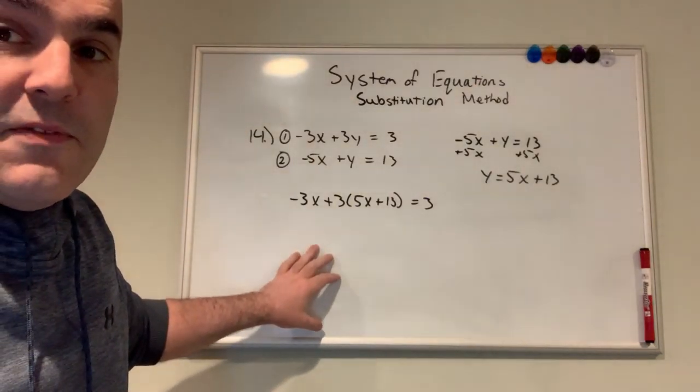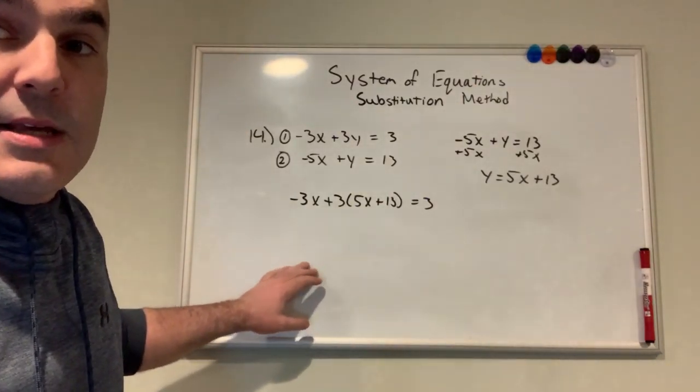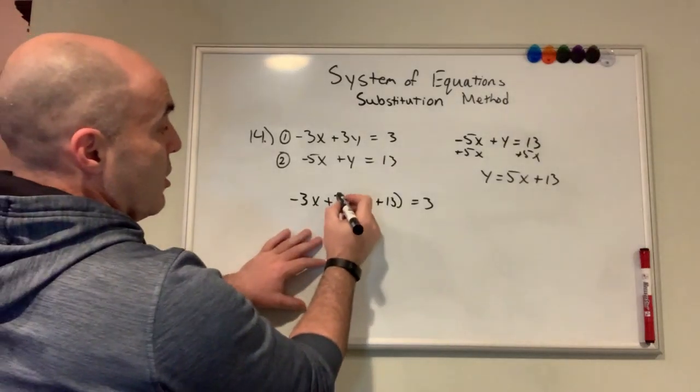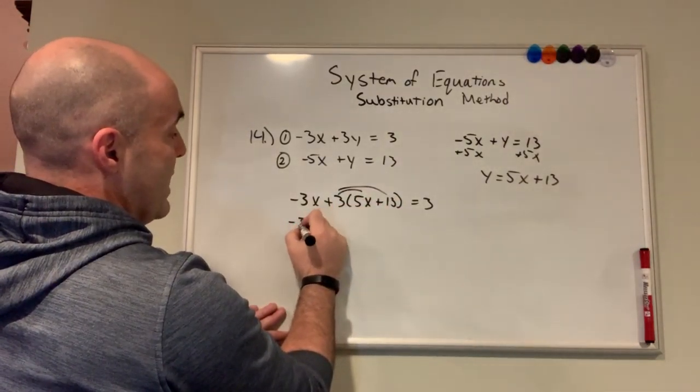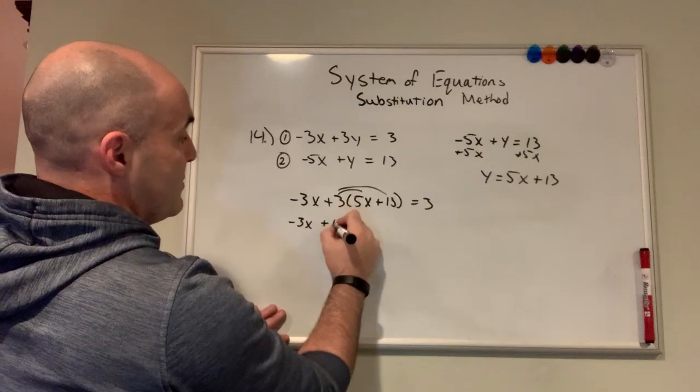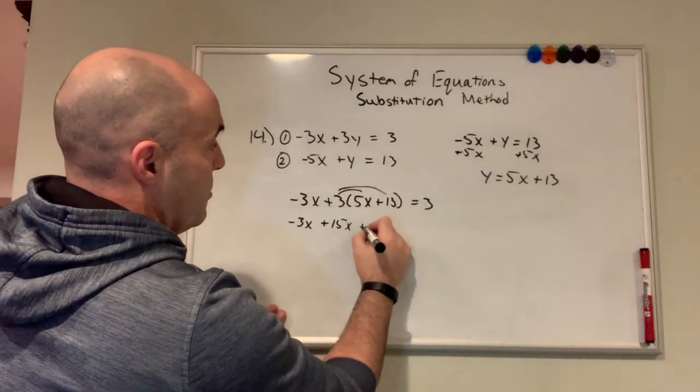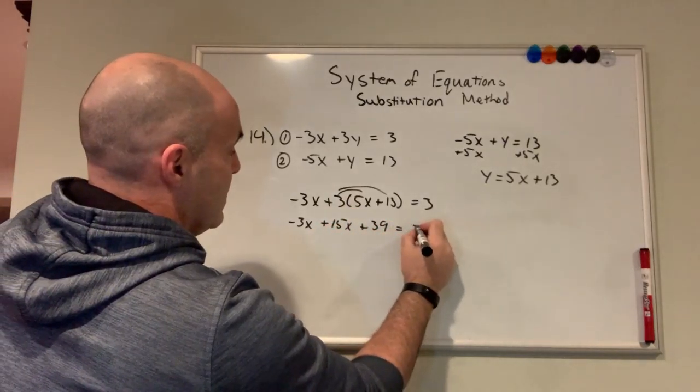Now we have an equation that's all in one variable, x, and we're going to solve for x. So we'll go ahead and simplify. This gives me negative 3x plus 15x plus 39 equals 3.